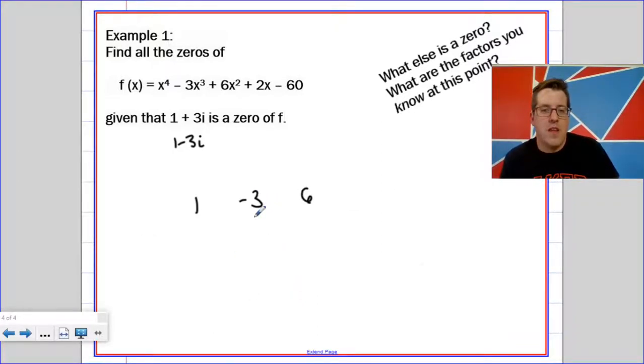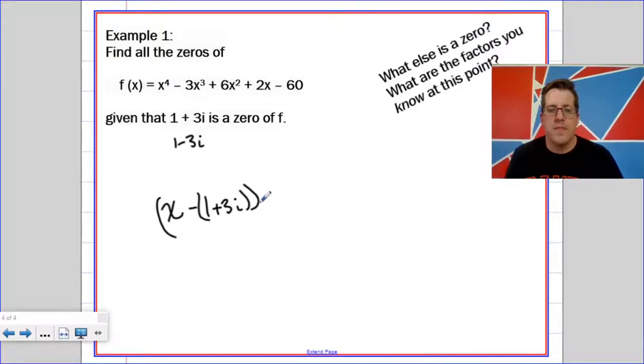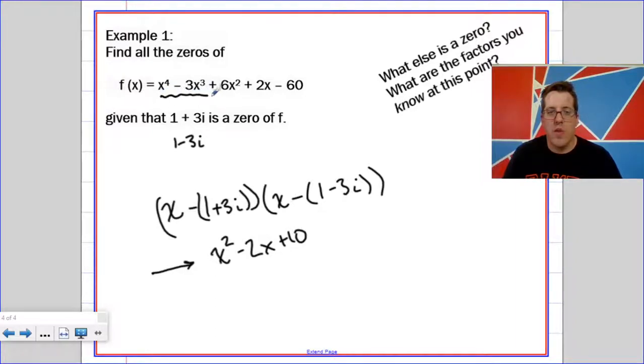The other thing to say is that if 1 plus 3i is a zero of f, and 1 minus 3i is a zero of f, then these are factors, which means that this x squared minus 2x plus 10. So you could do long division with x squared minus 2x plus 10, and you could figure out what this is going to be. All right, why don't you give that a try? Try to find all of the zeros of this f of x knowing that these two things are zeros. You can either use synthetic division, or you can use long division with that quadratic. Have fun.